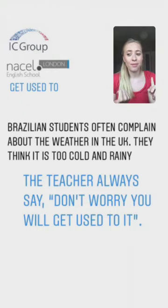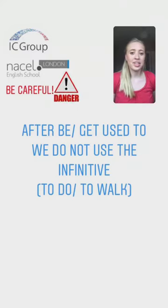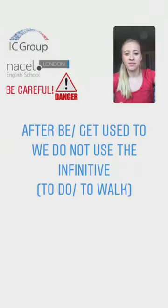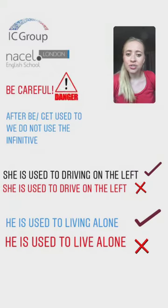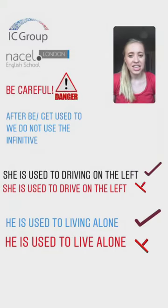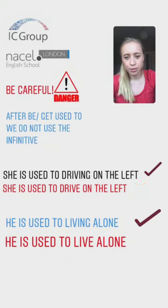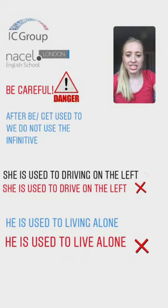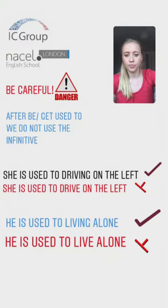There are some things to be careful of. After 'be used to' or 'get used to' we don't use the infinitive — we don't say 'to do' or 'to walk'. In this sentence the 'to' is a preposition. So we say 'she is used to driving on the left' — that's correct. We do not say 'she is used to drive on the left'. Similarly, 'he is used to living alone' is correct. We do not say 'he is used to live alone'. We do not use the infinitive verb.